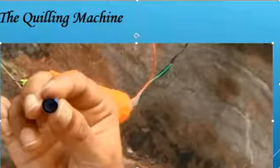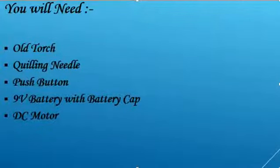Now you might be curious about how to make a quilling machine. Here are the components you'll need: an old torch, a quilling needle, a push button, a 9V battery with a battery cap, and a DC motor.